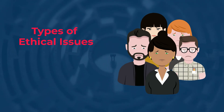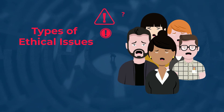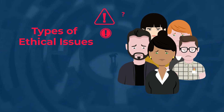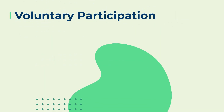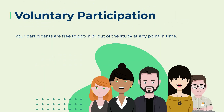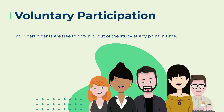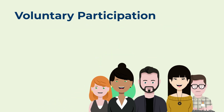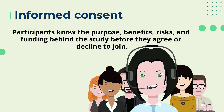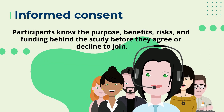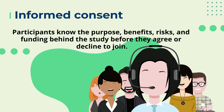Types of ethical issues: There are several ethical issues you should always pay attention to in your research design, and these issues can overlap with each other. You'll usually outline ways you'll deal with each issue in your research proposal if you plan to collect data from participants. Voluntary participation means your participants are free to opt in or out of the study at any point in time. Informed consent means participants know the purpose, benefits, risks, and funding behind the study before they agree or decline to join.